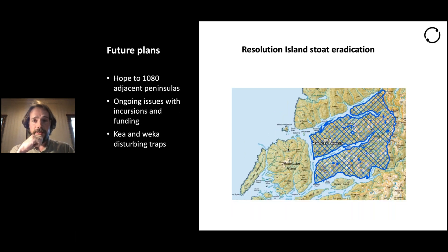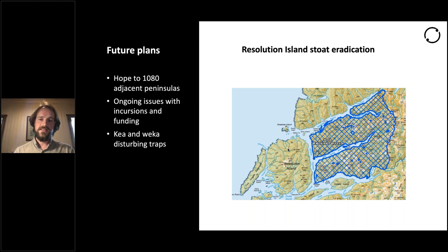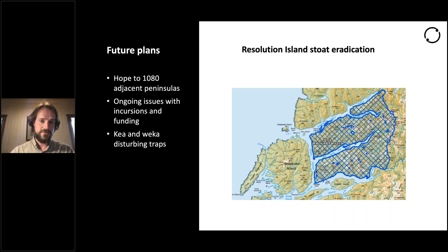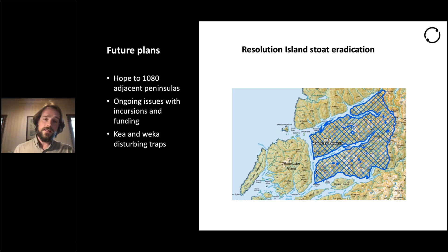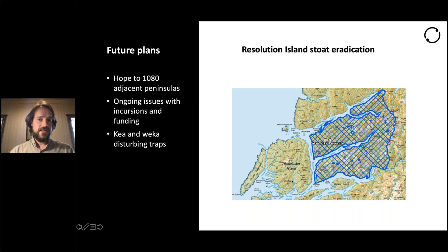What they hope to do is use 1080 on the adjacent peninsulas — set back because of COVID-19 — to try to decrease the number of stoats that can cross Acheron Passage. Acheron Passage is only about 600 metres. They're also having some problems with kea dismantling the traps using twigs and whatever tools they can, and also weka disturbing the traps. With my genetic modelling, while there are definitely some swimming across, a number of animals every year are avoiding trapping despite all of this.